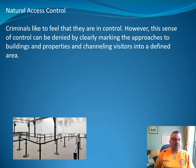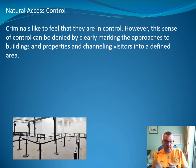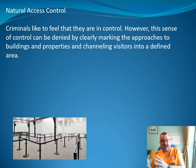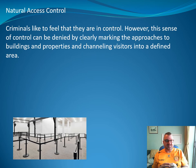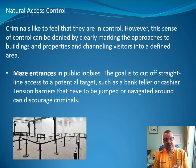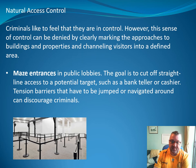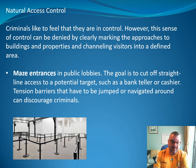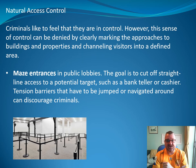Natural access control is the idea that you take away from criminals the feeling that they're in control, and instead you control them in terms of how they access or egress a building. You clearly mark approaches to buildings, channel people into defined areas, and use things like maze entrances in public lobbies. Someone barging through those maze entrances will be noticed. The goal is to cut off straight-line access to a potential target.